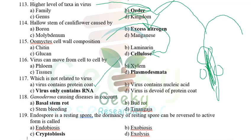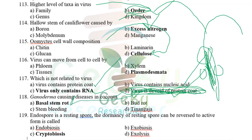Which is NOT related to viruses? Options: virus contains protein coat (correct), virus contains nucleic acid (correct), virus divides... The wrong option is 'virus contains only RNA' — this is not true because viruses contain either DNA or RNA, but not both; a virus has only one kind of genetic material.